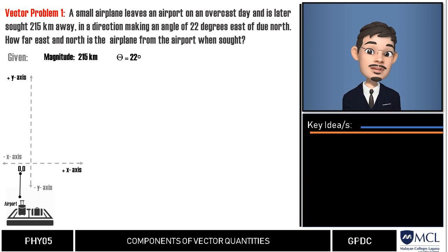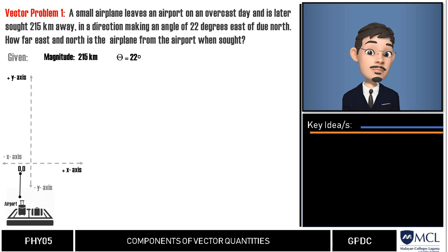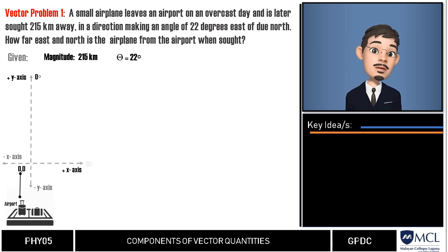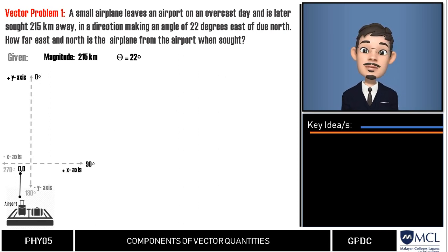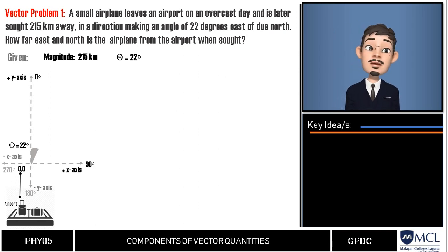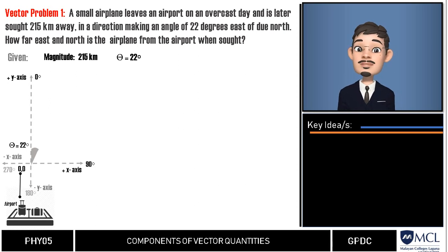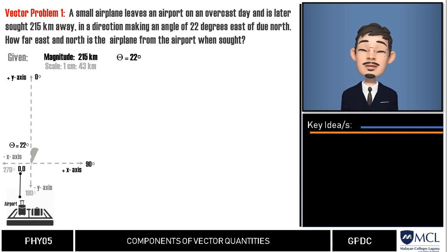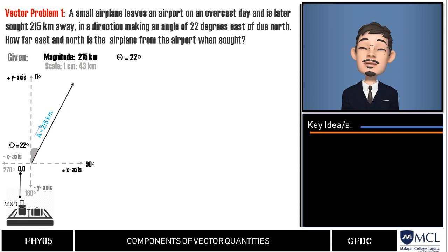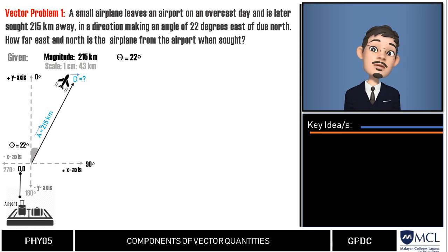Next, we will draw the magnitude given in the problem. The airplane flew at 22 degrees east of due north. Using our protractor, we measure 22 degrees with zero degrees at the positive y-axis, which is our reference frame. From the airport as the point of origin, the airplane flies 215 kilometers. We need an appropriate scale — say, one centimeter equals 43 kilometers — so we have five centimeters. Let us label this vector A, the airplane's displacement. Point D is where the airplane is spotted.